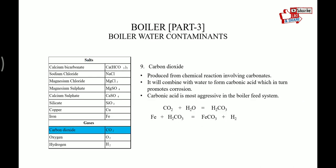Carbon dioxide is produced from chemical reactions involving carbonates. When carbonates decompose, they release CO2, which will combine with water to form carbonic acid, which in turn promotes corrosion. Carbonic acid is the most aggressive agent in a boiler water system that leads to corrosion.